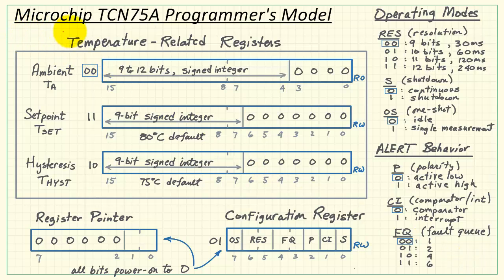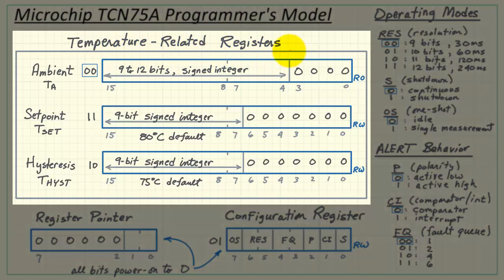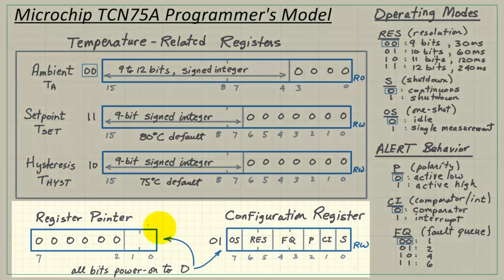Let's get acquainted with the TCN75A Programmer's model. We have three 16-bit temperature-related registers. Here's the measured temperature, or ambient temperature, set point temperature, and hysteresis. We'll come back to those in a bit.